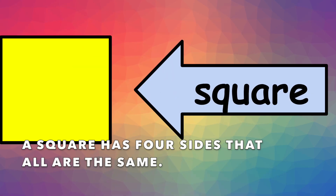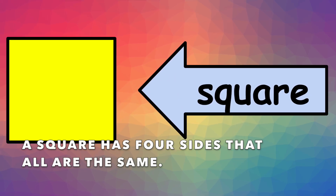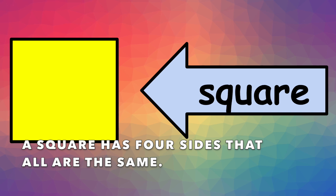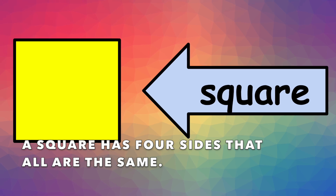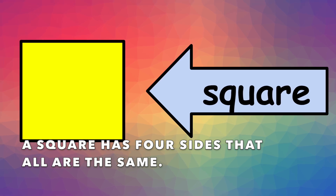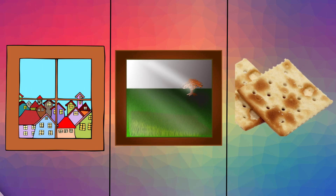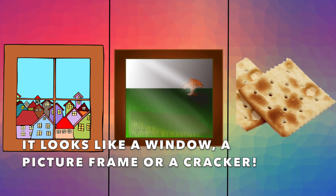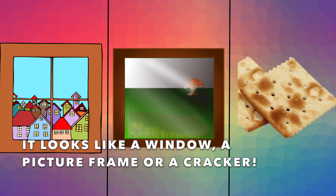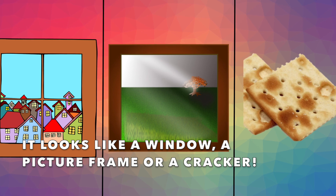A square has 4 sides that all are the same. It looks like a window, a picture frame, or a cracker.